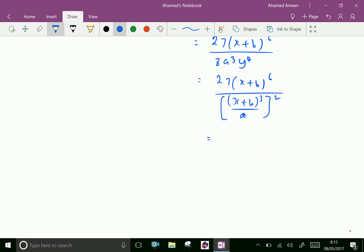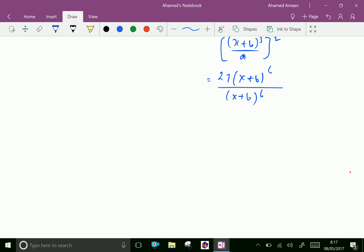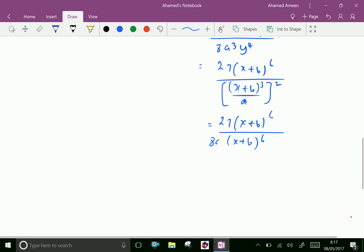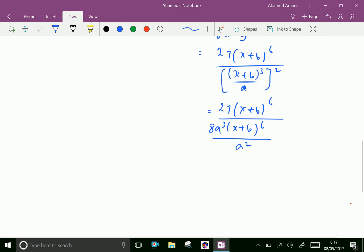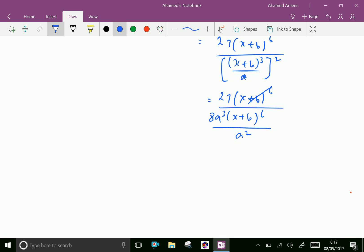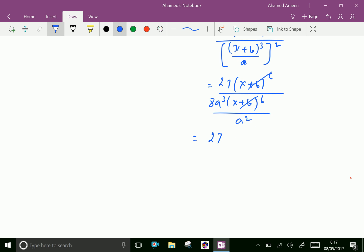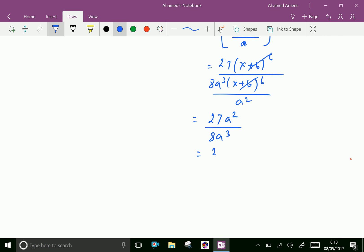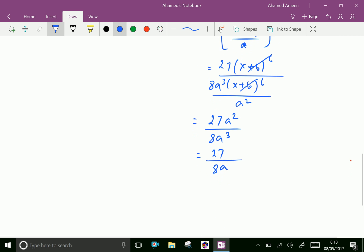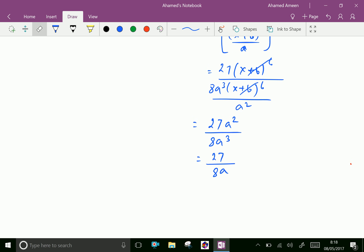Now we can write as 27(x+b)⁶ over (x+b)⁶ times 8a³ over a². We can cancel (x+b)⁶ terms. This gives us 27a²/(8a³), which equals 27/(8a), which is a constant.